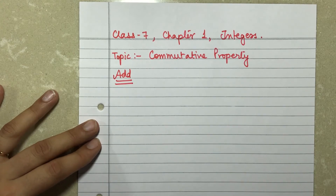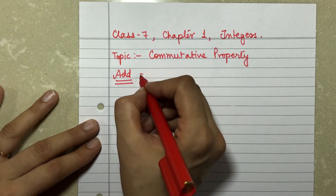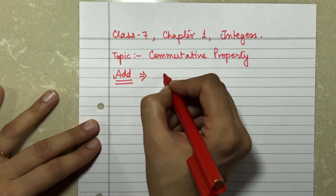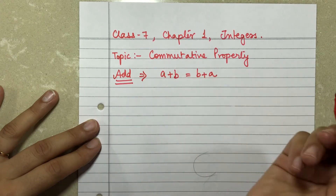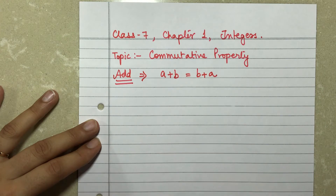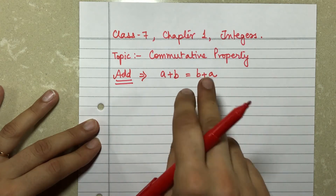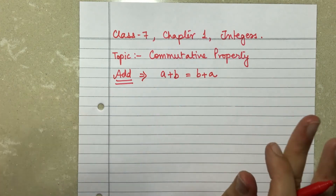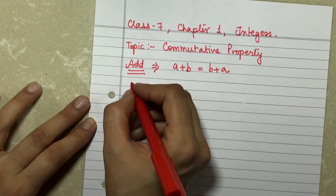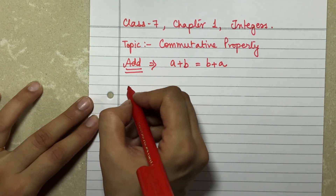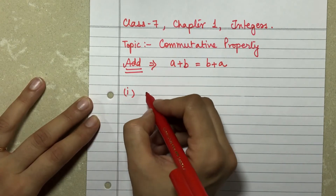Commutative property says in the case of addition that a plus b should be equal to b plus a. That is, whenever you have two numbers in addition and if you switch their position, the answer should be the same. So let's check what happens in the case of integers.